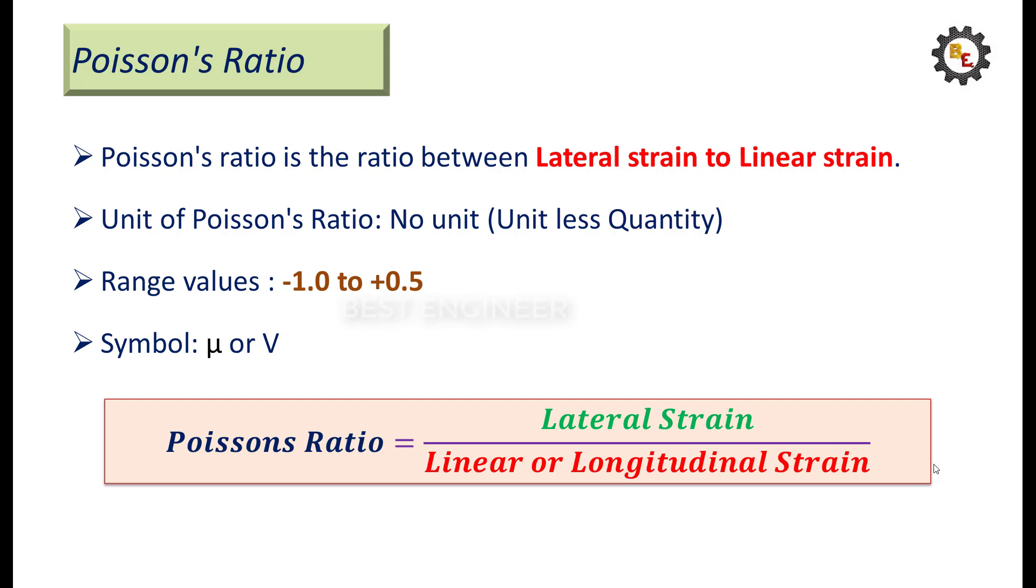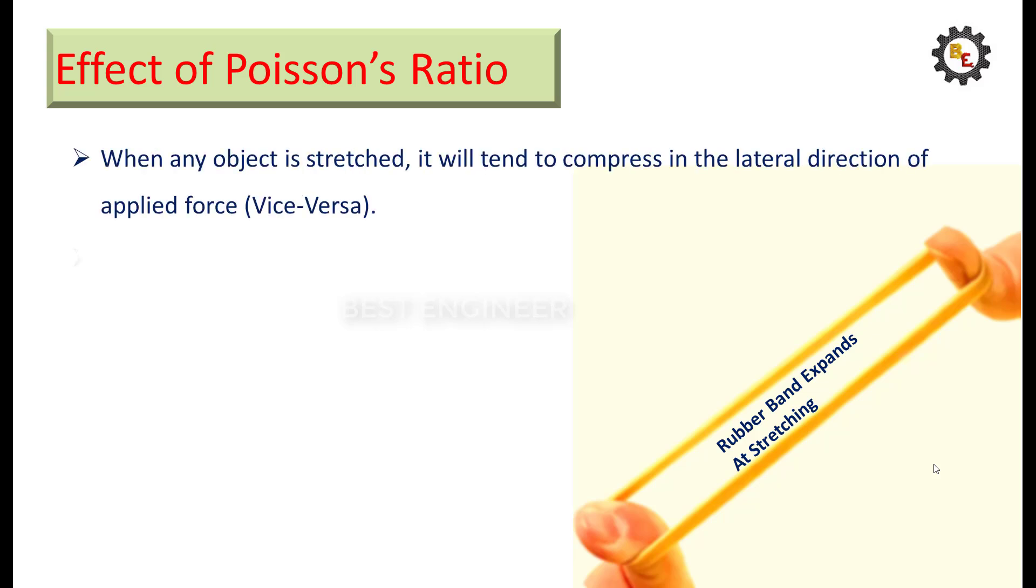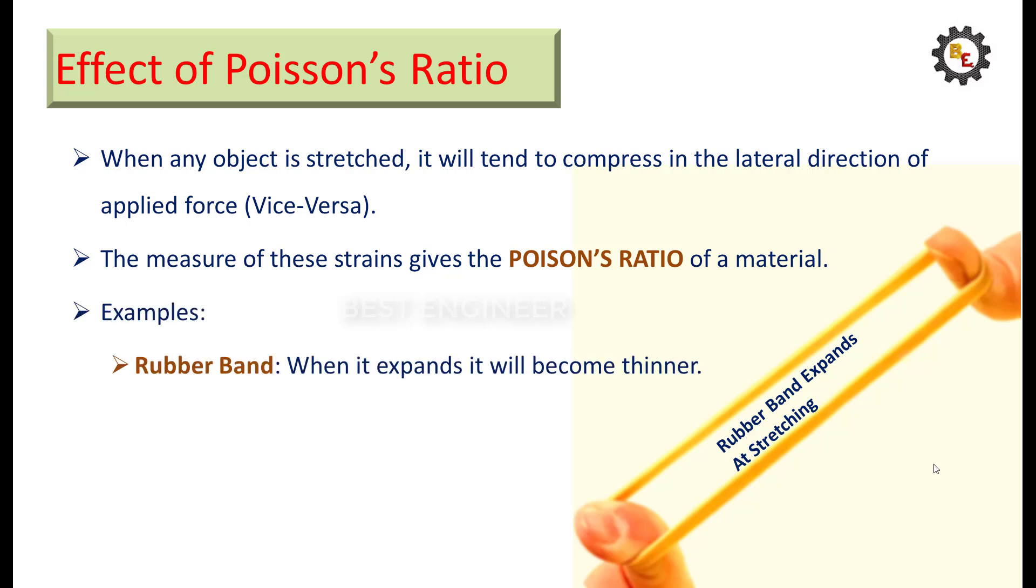Effects of Poisson's Ratio: When any object is stretched, it will tend to compress in the lateral direction of applied force. Poisson's Ratio measures the strain value of the material. For example, imagine a rubber band. When it expands it will become thinner.